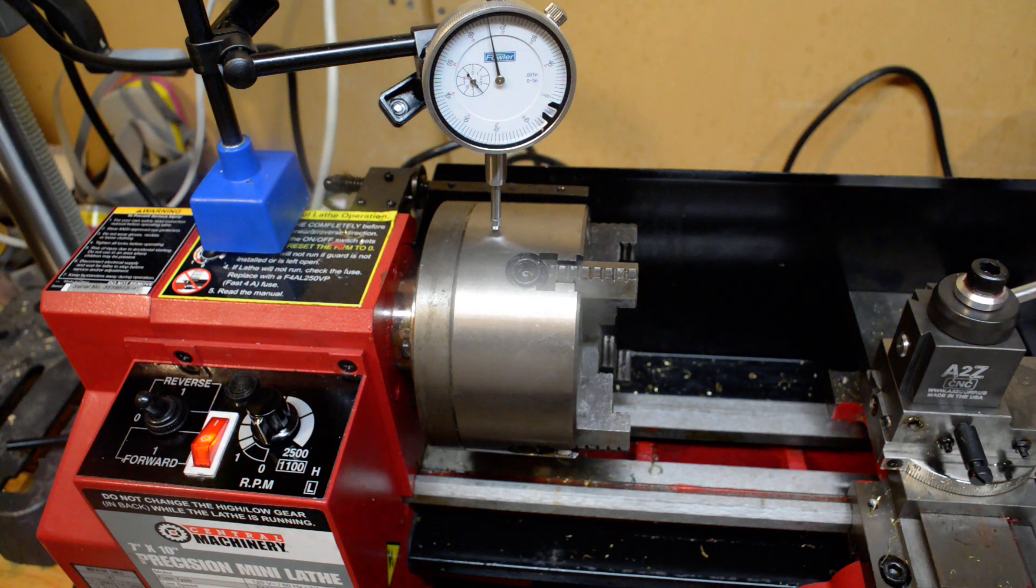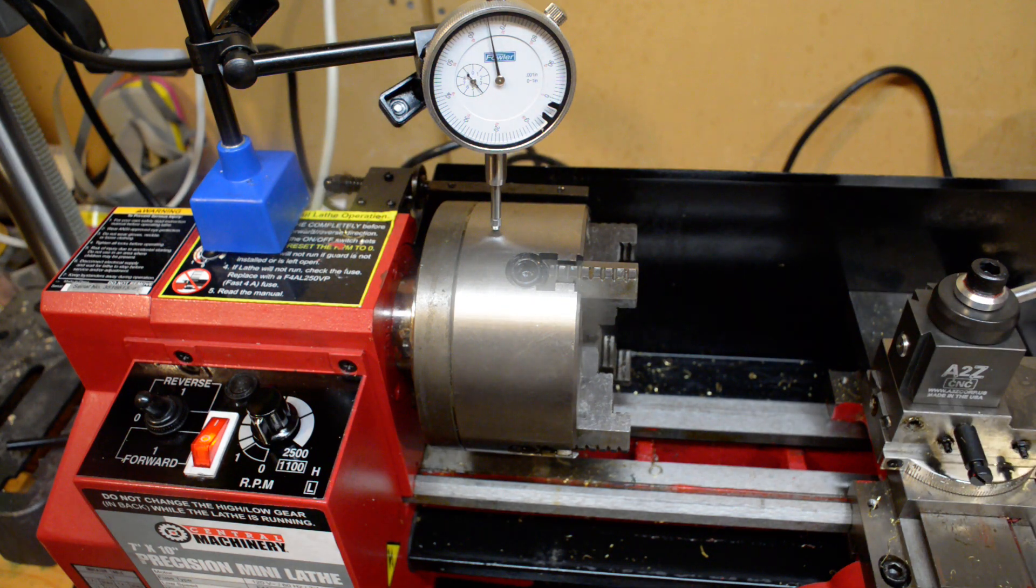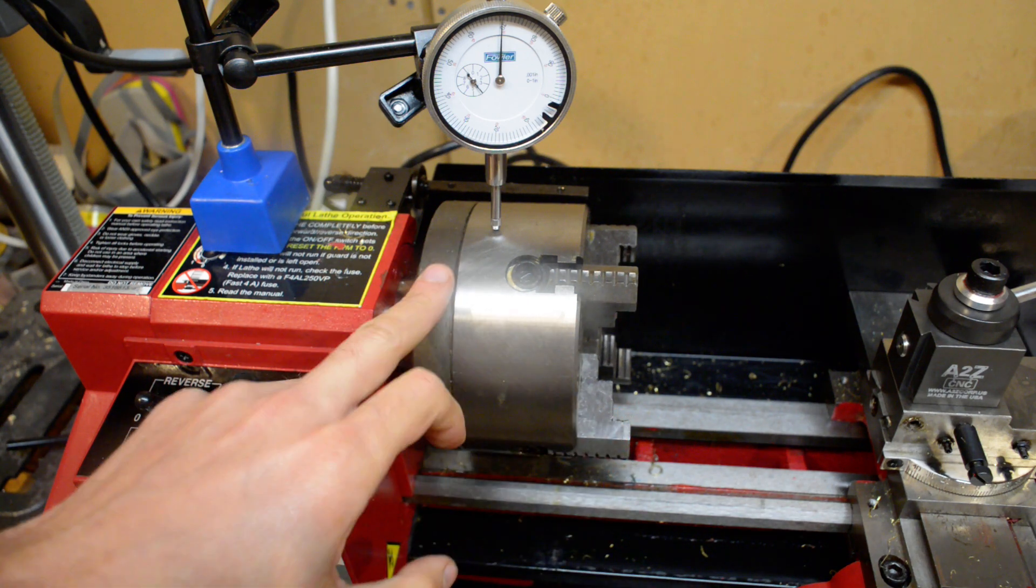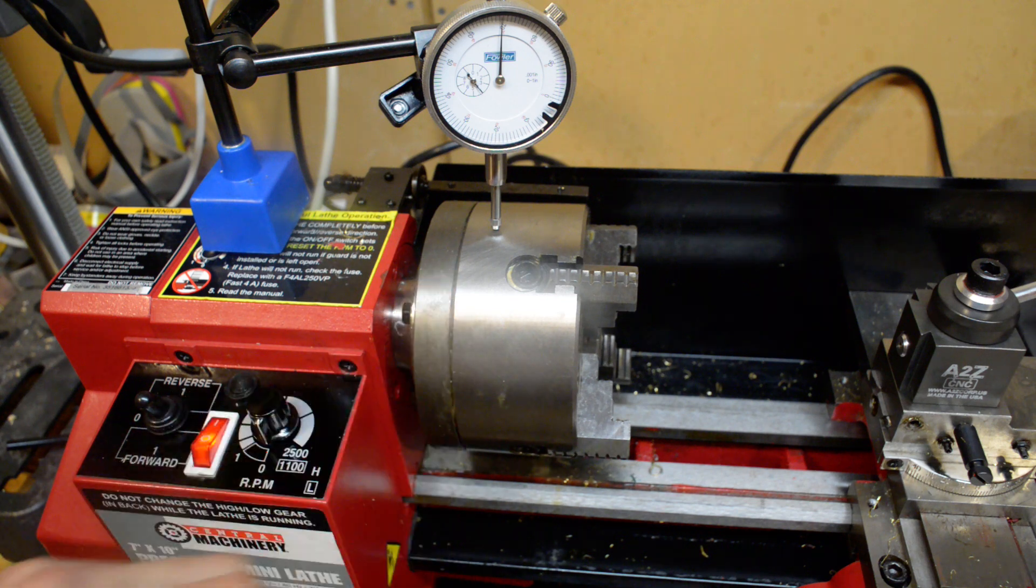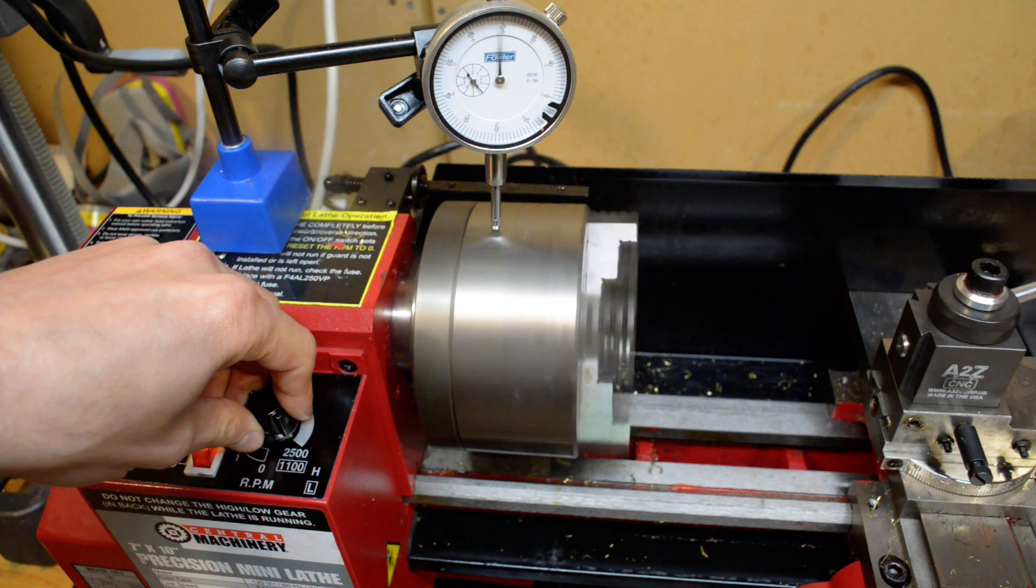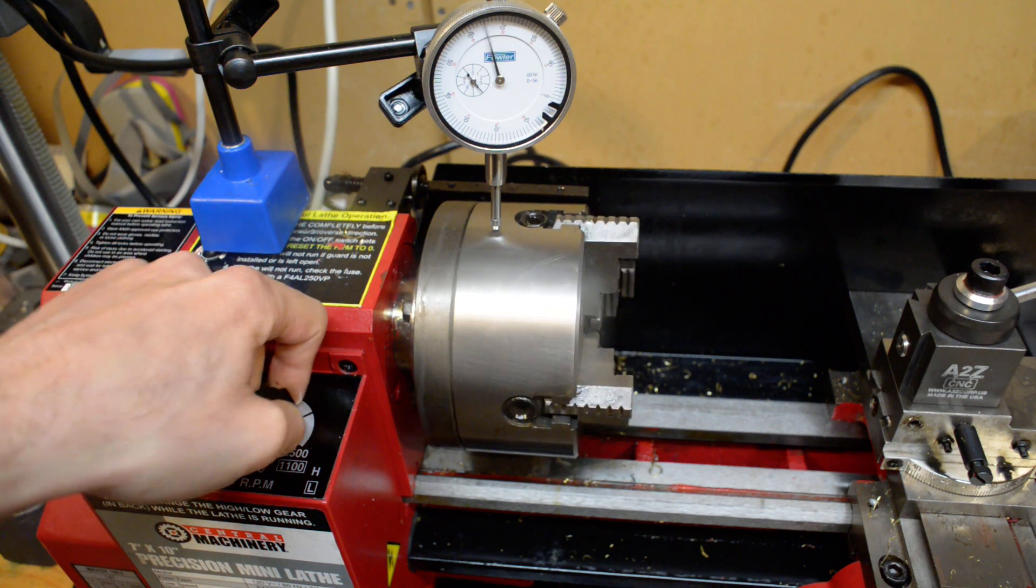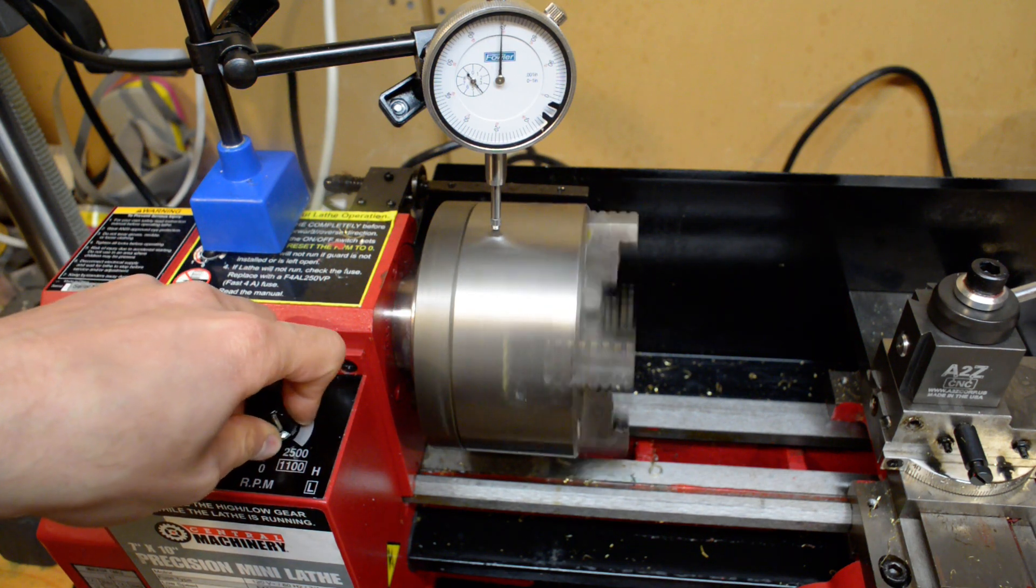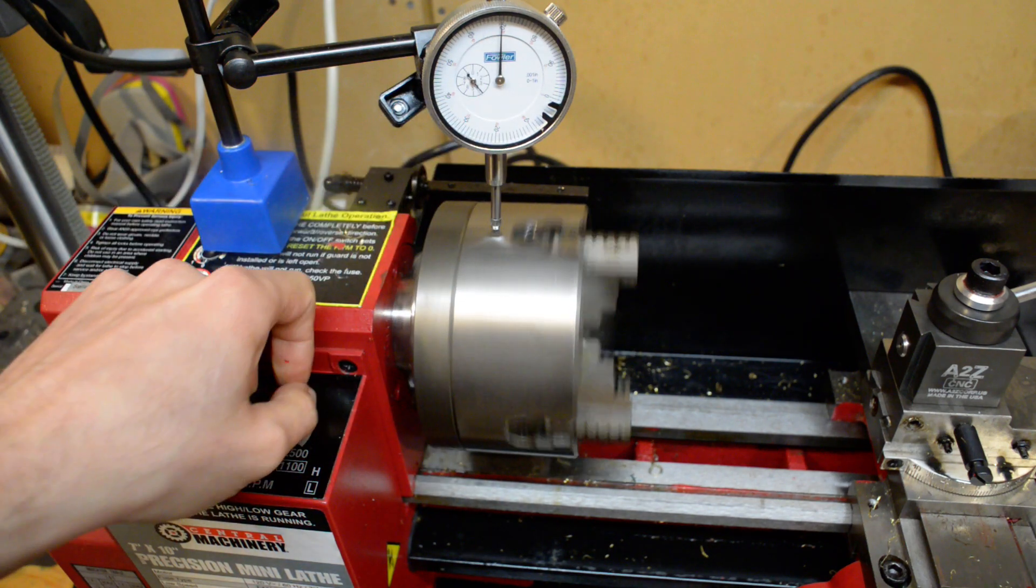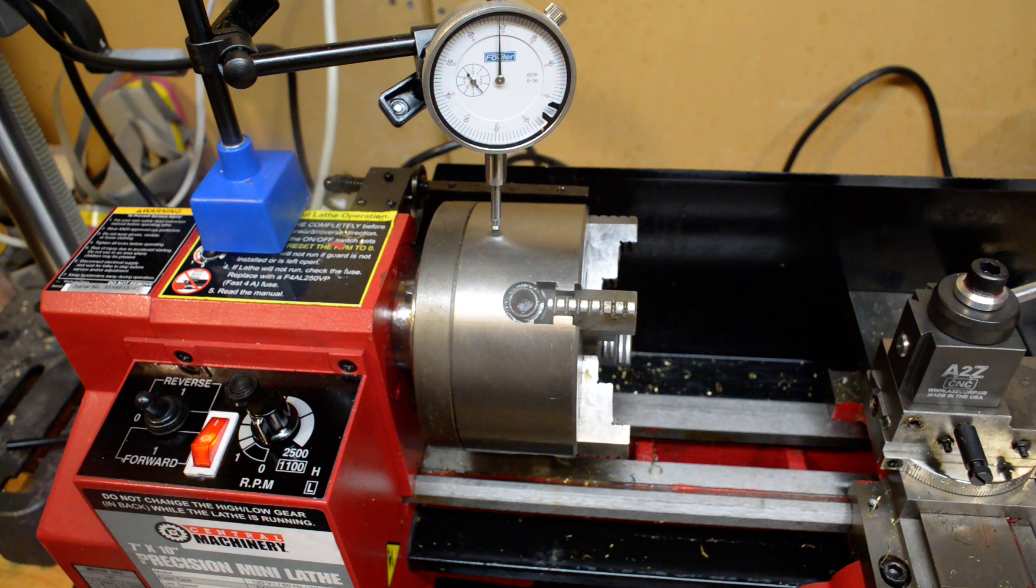So given that, today from Little Machine Shop arrived this wonderful Chinese made four-jaw independent chuck. I mounted it up on here and expected wonders, and this is what I'm seeing. So we're seeing if you look up here about five thousandths run out on the chuck itself, so I'm not quite sure what to do with that.